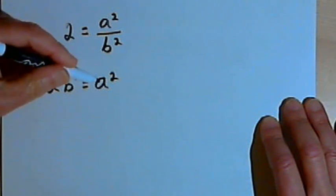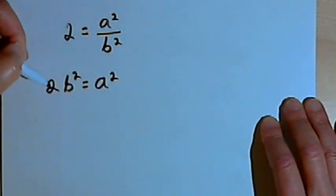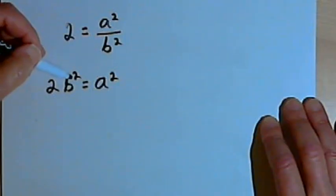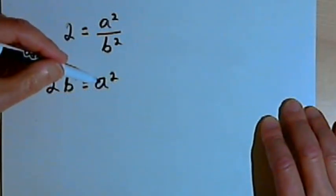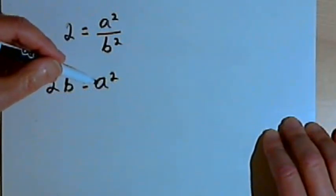If 2b squared equals a squared, that means a squared must be divisible by 2 because we multiplied some number, b squared, by 2 in order to get a squared. And if a squared is divisible by 2, then a has to be divisible by 2.